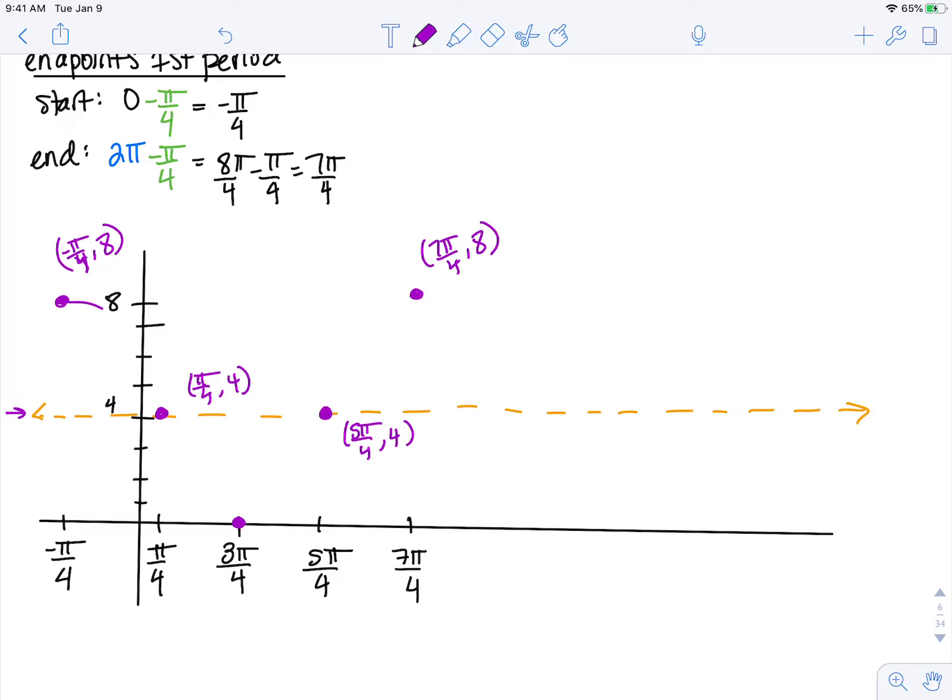So if I draw my first period of my cosine curve, it should go through these five points here.